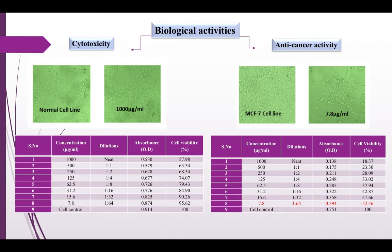Cytotoxicity: The MTT assay was used to develop a quantitative colorimetric assay which detects living but not dead cells for mammalian cell survival and proliferation. The cytotoxicity study shows that the IC50 value is greater than 1000 μg/ml, which indicates that the compound is almost non-toxic to the normal Vero cell line. Anti-cancer activity: MTT assay was performed to comprehend the efficacy of the title compound against the proliferation of cancer cells. The as-synthesized material shows an excellent anti-cancer effect on the MCF-7 cell lines, even at a very low concentration of 7.8 μg/ml, with 52.46% cell viability.